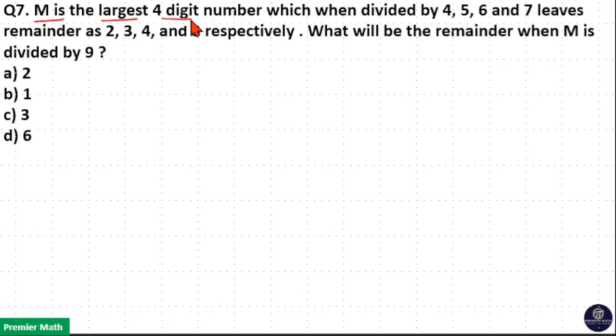M is the largest 4-digit number which when divided by 4, 5, 6 and 7 leaves remainder as 2, 3, 4 and 5 respectively. What will be the remainder when M is divided by 9?